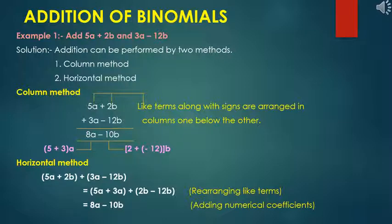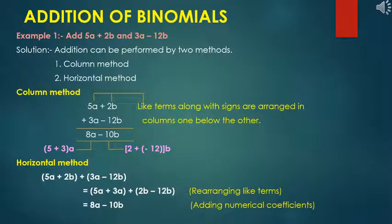Now the horizontal method: write 5a plus 2b plus 3a minus 12b. Regroup the like terms: (5a plus 3a) plus (2b minus 12b). Solving: 5a plus 3a gives 8a, and 2b minus 12b gives minus 10b. The answer is 8a minus 10b.